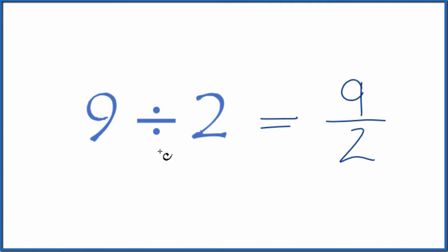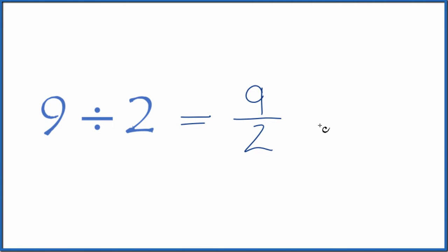You could also take your calculator and divide 9 by 2. You'd end up with 4.5. So 9 divided by 2 can be written as the fraction 9 over 2, or the decimal here, 4.5.